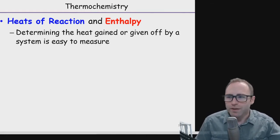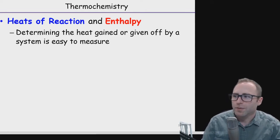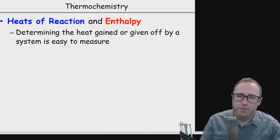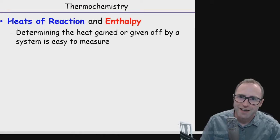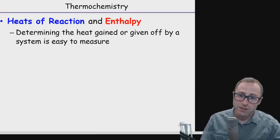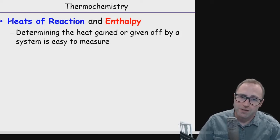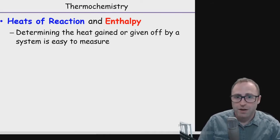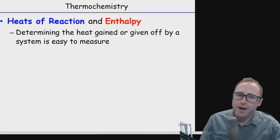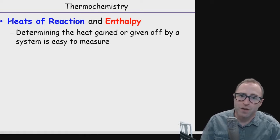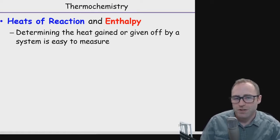With thermochemistry, specifically in chemistry, a lot of times we're measuring the change in heat for a chemical reaction. Sometimes it's going to be a reaction like combustion. Sometimes it's just going to be some kind of solid dissolving. That dissolving isn't really a chemical reaction, but combustion is. Whether it's a dissolution or a combustion, measuring heat gained or lost is pretty simple — you just use a thermometer.